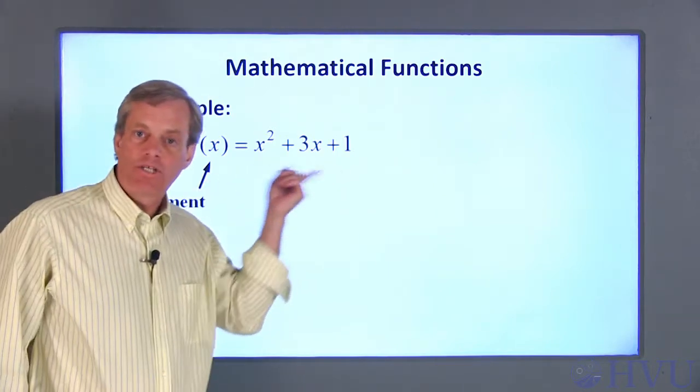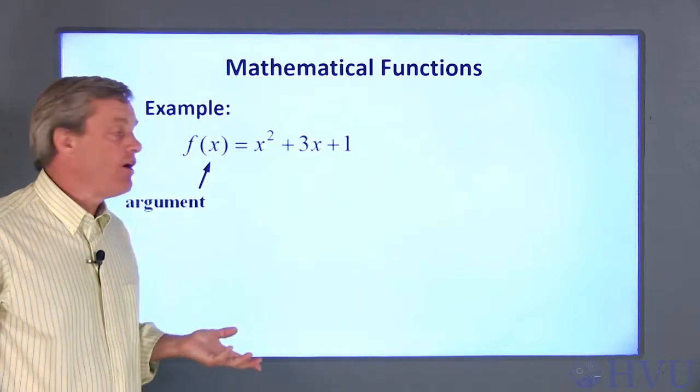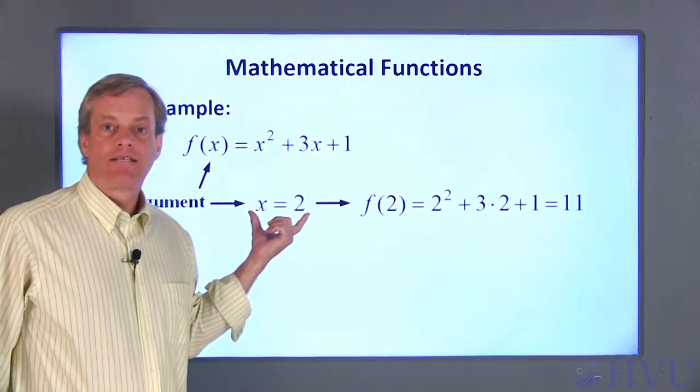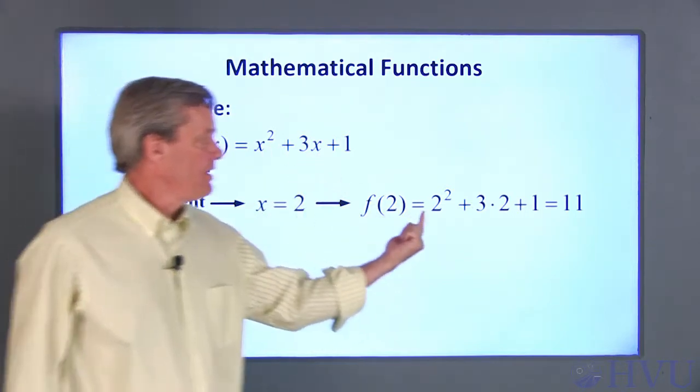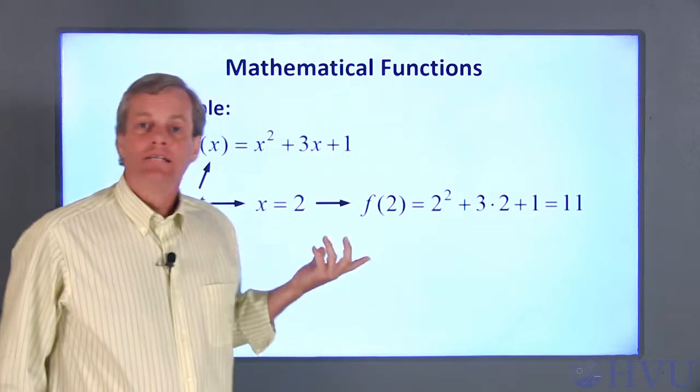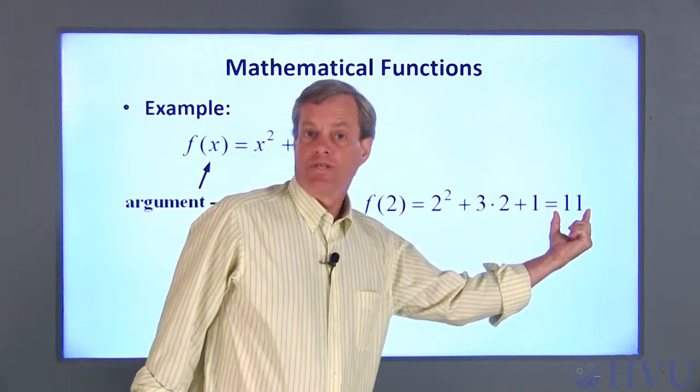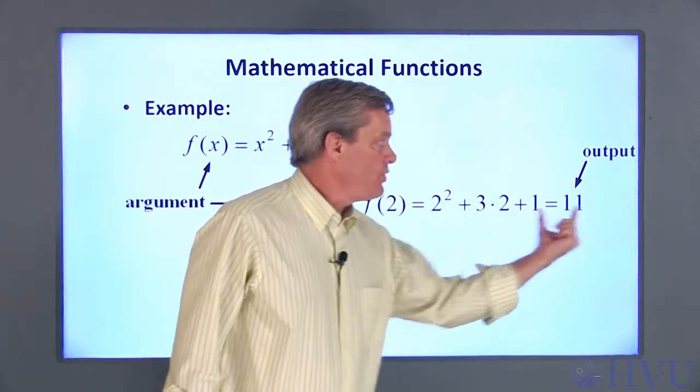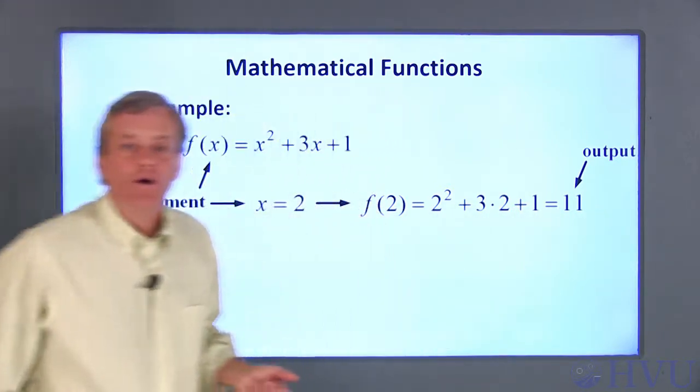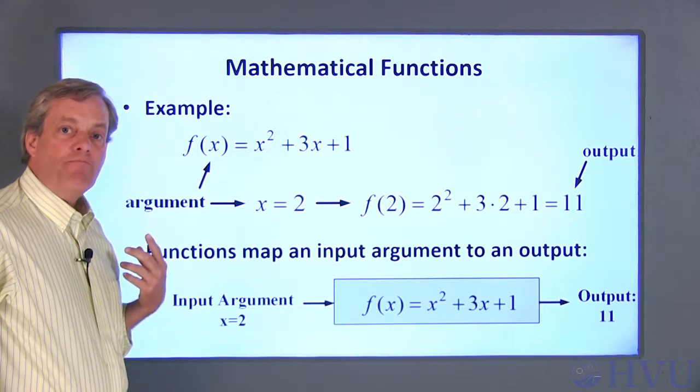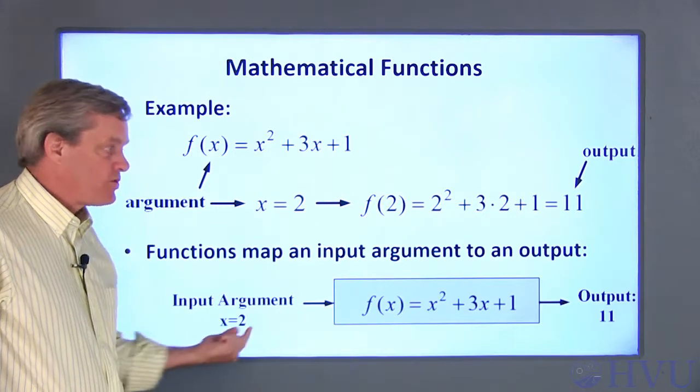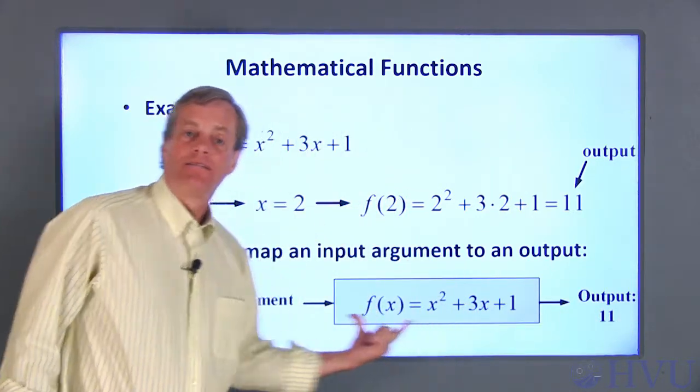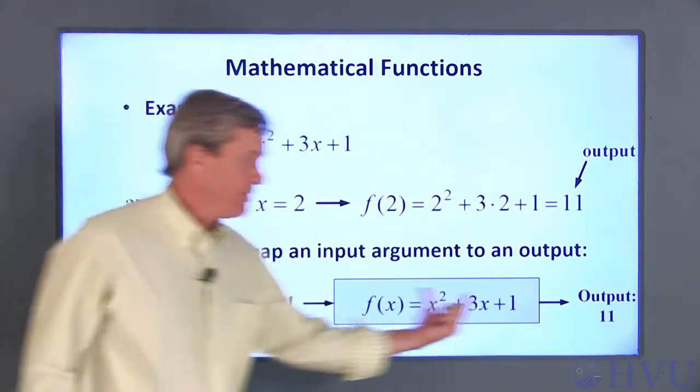For example, to evaluate the function at x equals 2, just substitute 2 for x, perform the math, to get f of 2 equals 11. We can think of the output of the function when x equals 2 as 11. So, we can think of a function as something that maps or transforms one number into another number. It's kind of like a black box that converts this number to that one.